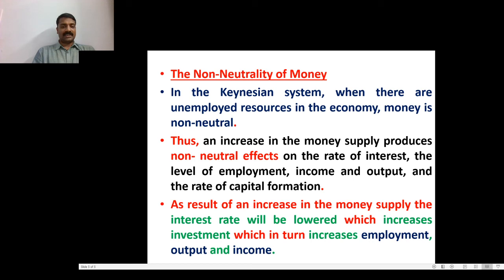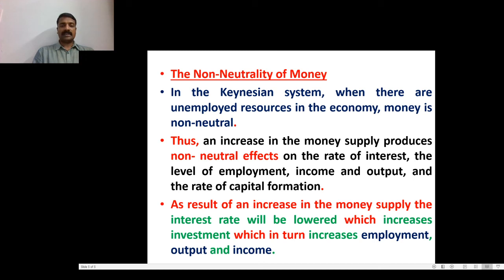An increase in the money supply will lower the interest rate, which increases investment, which in turn increases employment, output, and income. So, when the money supply increases, that leads to a reduction in the interest rate, which in turn increases investment, and that leads to increases in employment, output level, and income level.